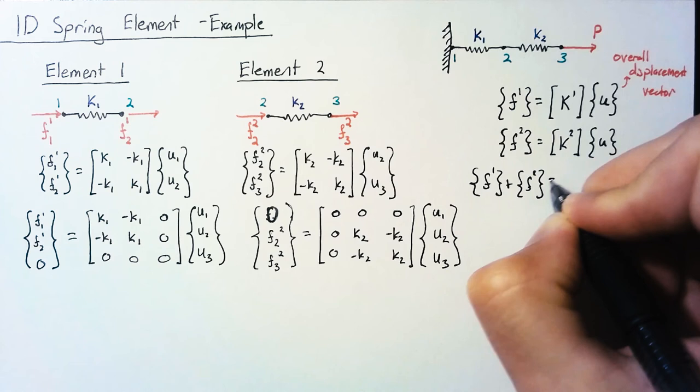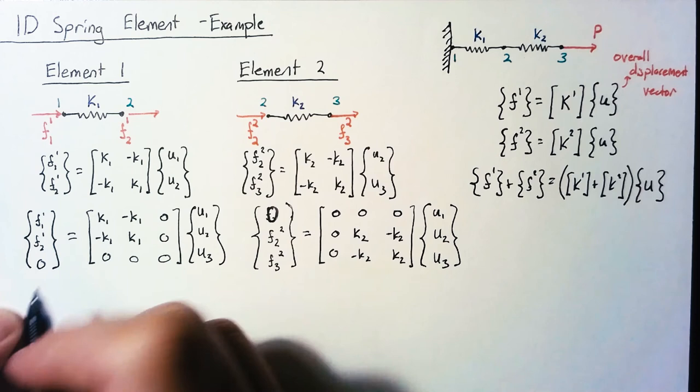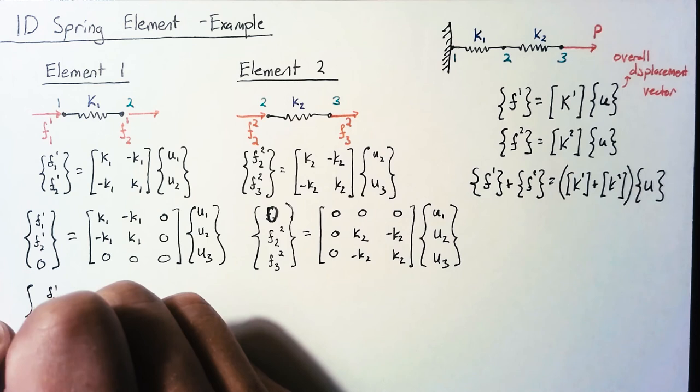So we're going to add our two force vectors together. And from that, we end up with f1 of 1, f2 of 1 plus f2 of 2, and finally f3 of 2.